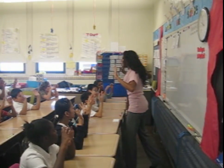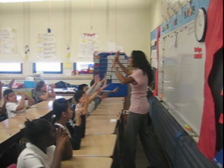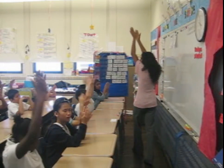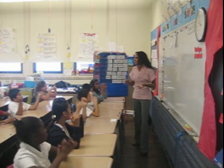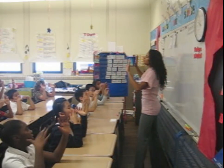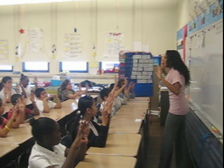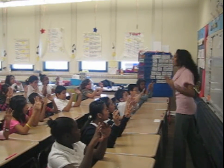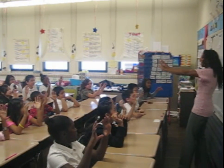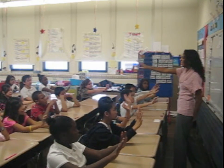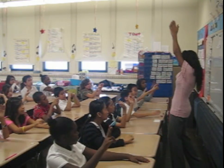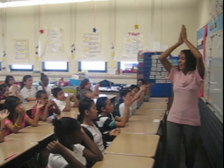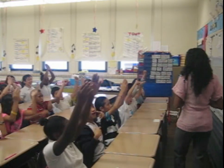A prime number is a whole number that has only two factors — one and that number. Mirrors with words: A prime number is a whole number that only has two factors. One. And that number.